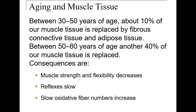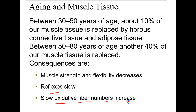The aging process is not kind to the body. We lose muscle strength and flexibility because we cannot repair damaged tissue as quickly as when we are younger. Reflexes are slower, and slow oxidative fiber numbers increase — so we are capable of longer contractions, but we are not moving quite as fast.